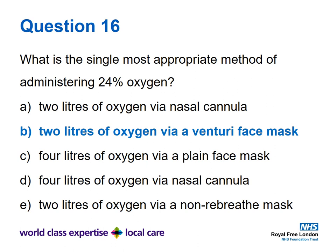Question sixteen: the single most appropriate method of administering 24% oxygen. The answer is B: two litres of oxygen via a Venturi face mask. When prescribing a specific concentration — 24%, 28%, 35% etc. — use the Venturi system. Two litres via nasal cannula is not the same as 24% oxygen. Four litres via a plain face mask gives approximately 24–35%. You should never administer two litres via a non-rebreather mask; always use at least 10 litres otherwise you will rebreathe. A tutorial on oxygen is available on Moodle and YouTube.